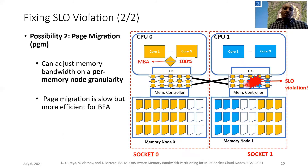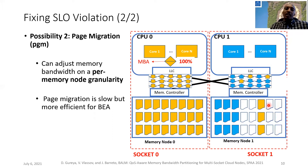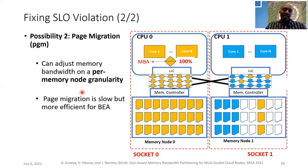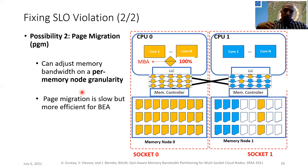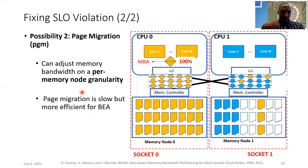Another possibility is to migrate a fraction of best-effort pages from the latency-critical application's memory node to fix the SLO violation. Page migration can adjust memory bandwidth at a per-memory-node granularity, unlike the per-core granularity of MBA. However, page migration is slow because it enforces intensive data movement and management overheads. But compared to MBA, it is more efficient for best-effort applications.